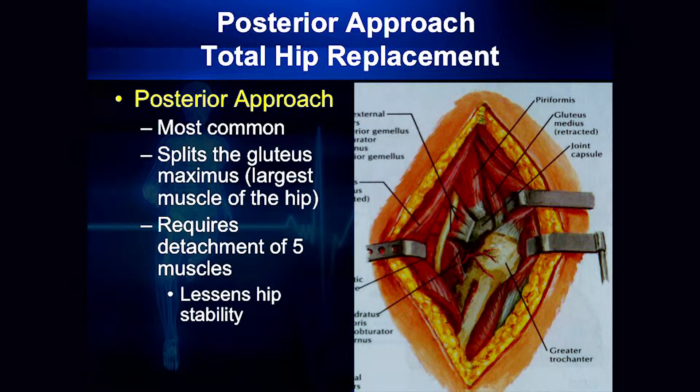How is it different from other approaches? Well, probably the posterior approach — as you can see here, this is a different anatomy. When a posterior approach is done, you actually have to cut through some of the muscles in the hip. The downside of that, if you see all these muscles being cut, is that those muscles have to heal themselves.